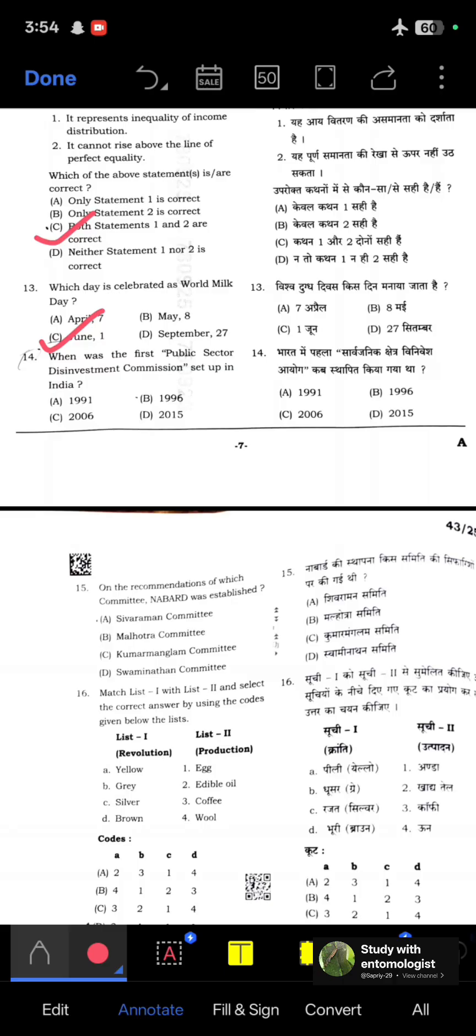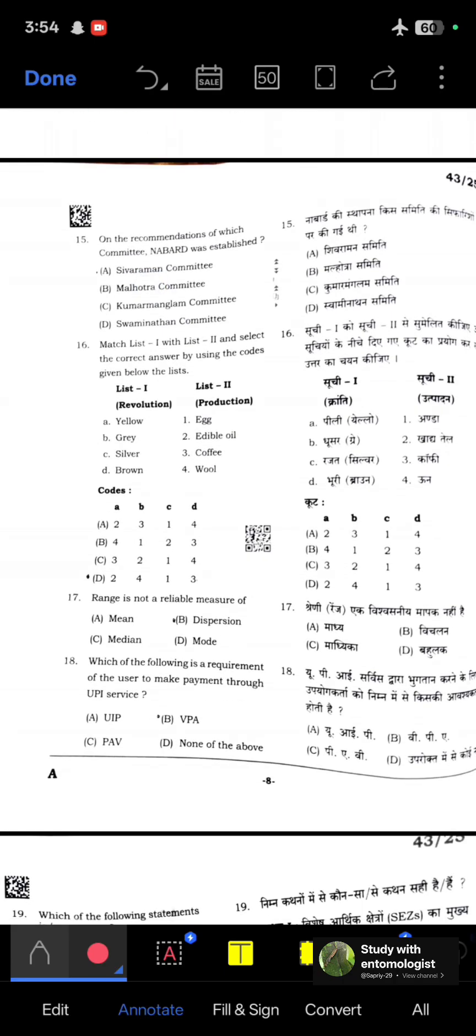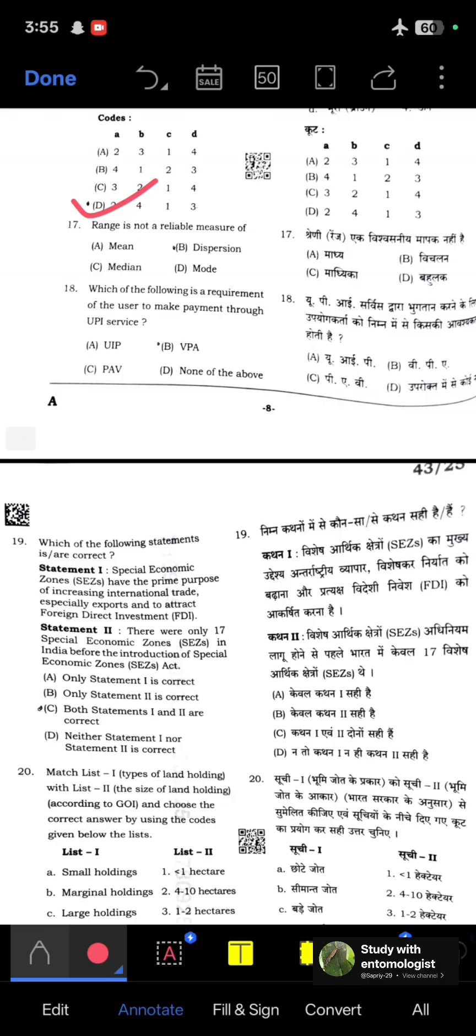When was the first public sector disinvestment commission set up in India? It was set up in 1996. On the recommendation of which committee was NABARD established? Shivaraman Committee. Next: Match list one with list two. Yellow is related to edible oil, grey to wool, silver to egg production, and brown to coffee. Option D is correct.